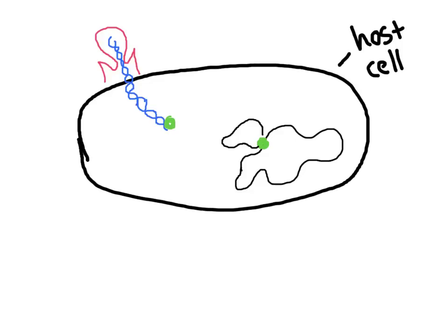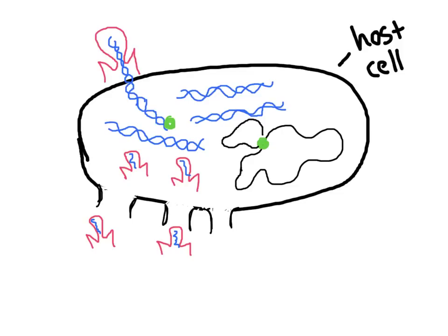And it starts making copy after copy after copy, and the cell is overwhelmed. There's now all of this viral DNA inside the cell, telling the cell not to make its own chromosome like it was before, but instead to make more viruses. And it keeps doing this until eventually the cell explodes, and the new viruses can emerge and go off to infect other cells.